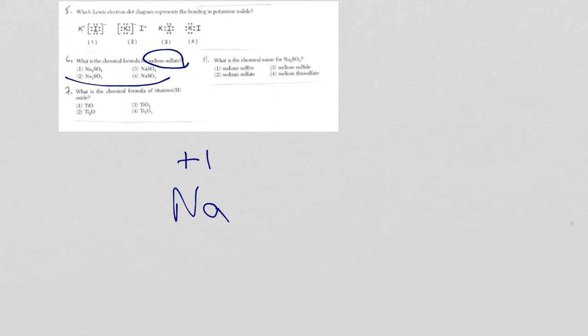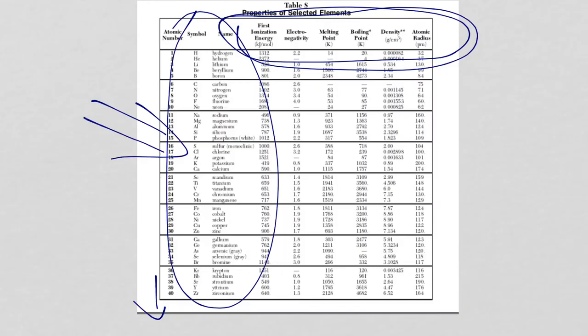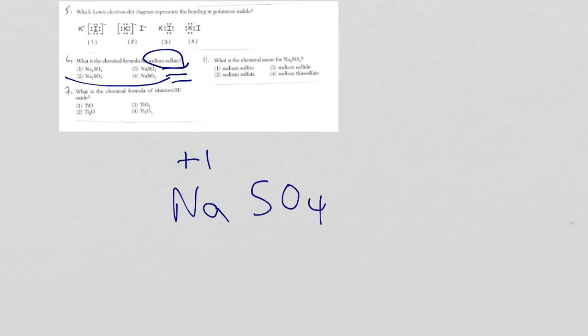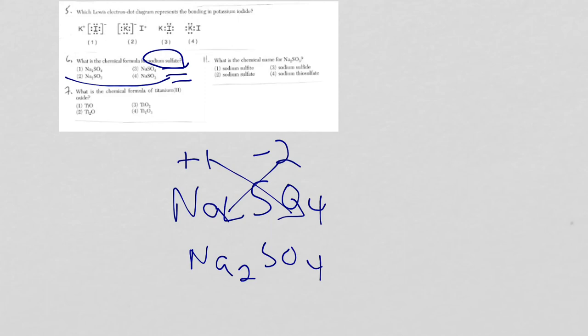The first one is sodium sulfate. If you don't know the symbol for sodium — reference table S — but it is Na. The important thing is to know that it's a group one metal, so it's going to have a plus one charge because it will always give up the one electron. The ATE ending in sulfate means you have a polyatomic. Polyatomic ions are found on reference table E, so just look for sulfate. The key is it's SO₄ with a 2-minus charge. We're going to criss-cross the numbers from the charges, so it's Na₂SO₄. That is choice one.